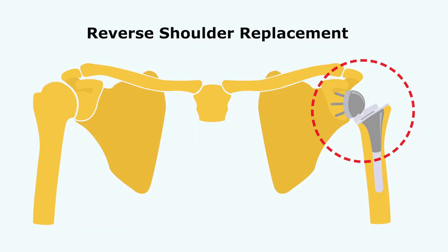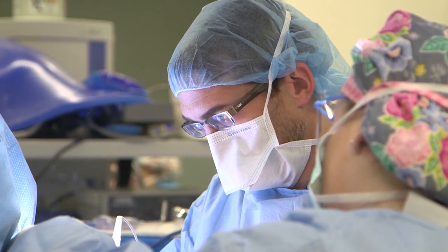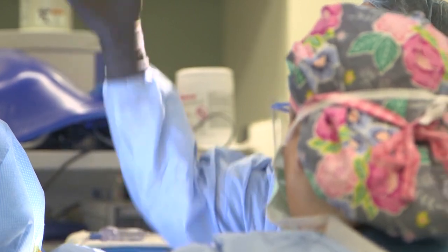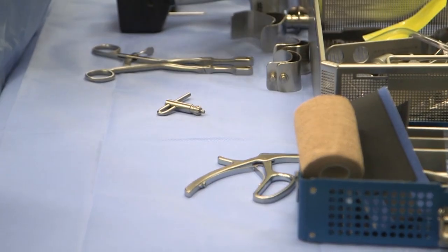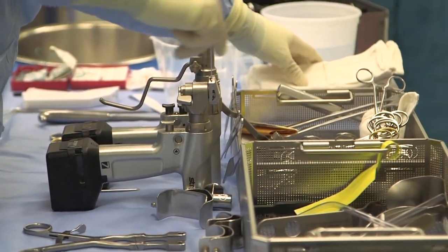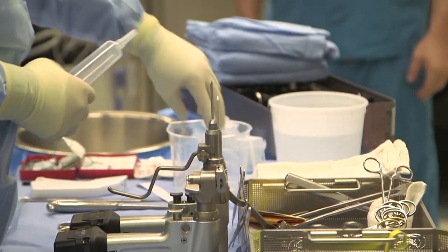Finally, there is a reverse total shoulder arthroplasty, also called a constrained total shoulder arthroplasty. Essentially it takes the ball and places it on the socket side, and the socket on the ball side. We use this type for significant bony deformities as well as large rotator cuff tears. Although it has less motion than an anatomic total shoulder replacement, it has an easier recovery and allows shoulder arthritis to be addressed in a patient who does not have a well-functioning rotator cuff.